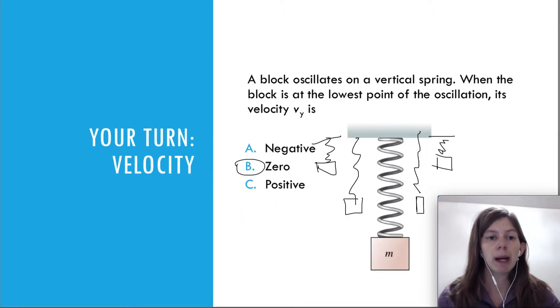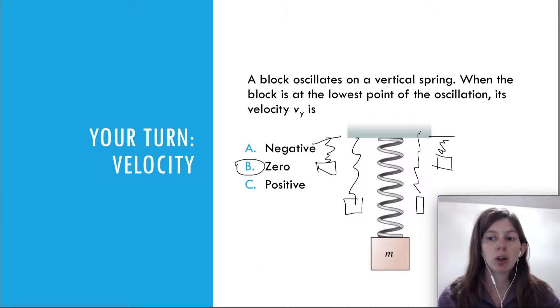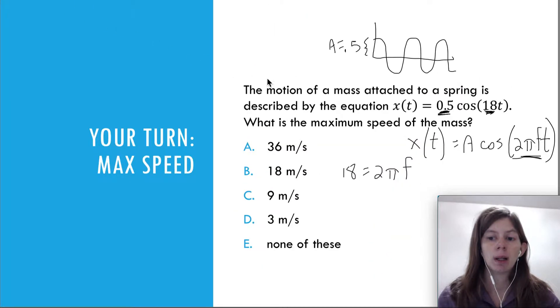So how does that help us get the maximum speed? If we go back a few slides, we learned that the maximum speed is equal to 2πf times A. So all we have to do for this one is multiply 18, which is 2πf, times A, which is 0.5. So when you multiply those two together, you get 9 meters per second.